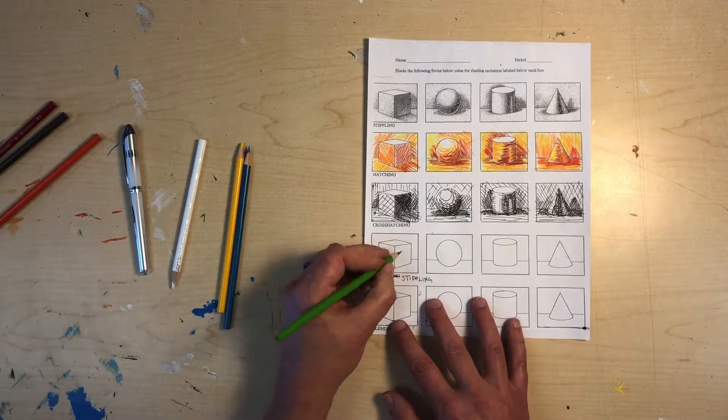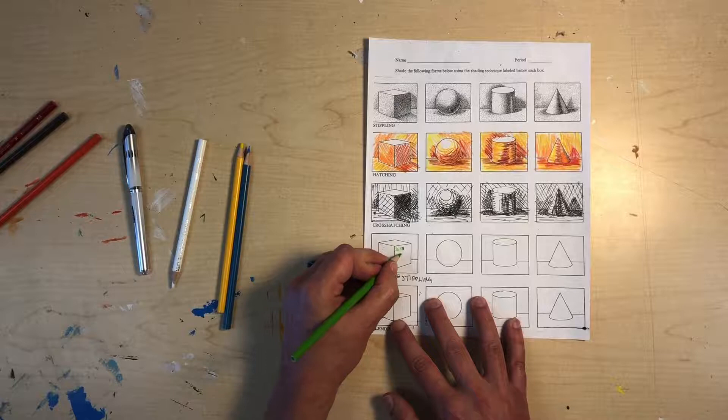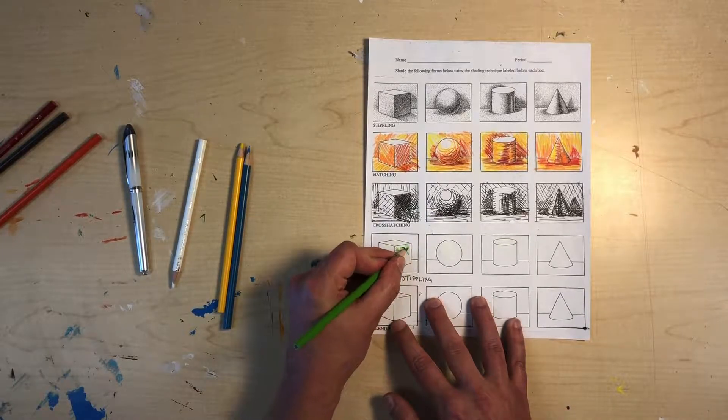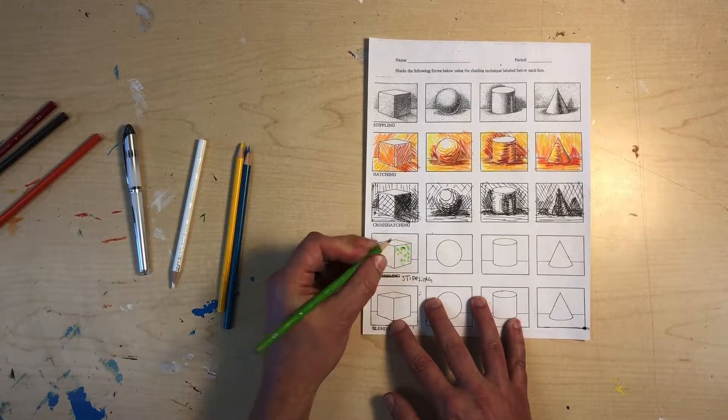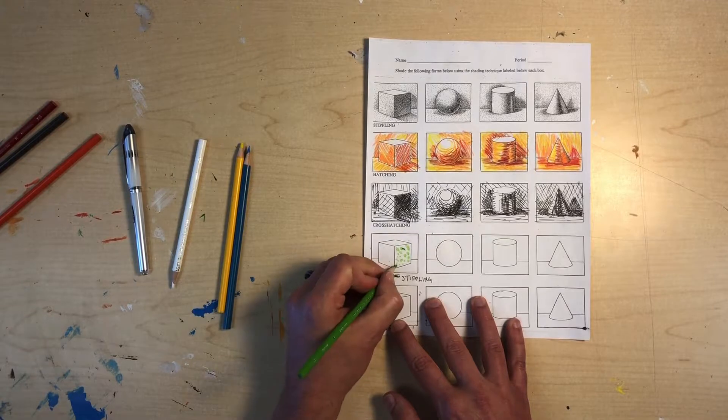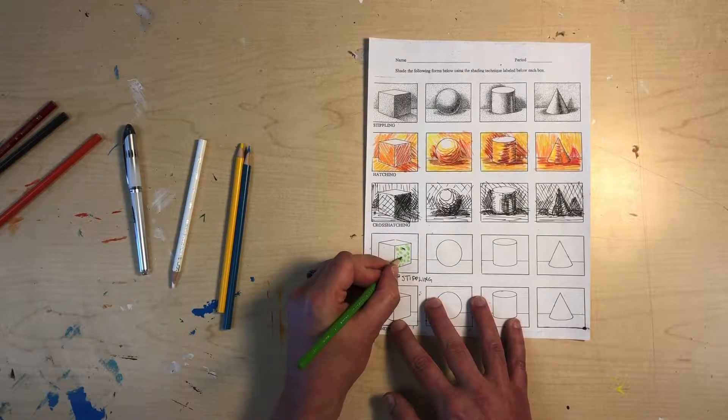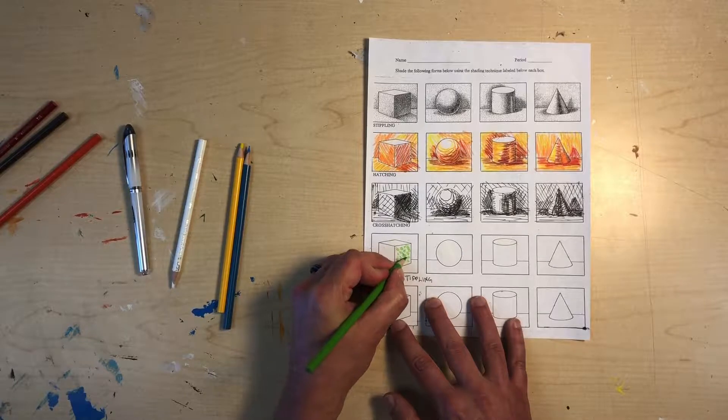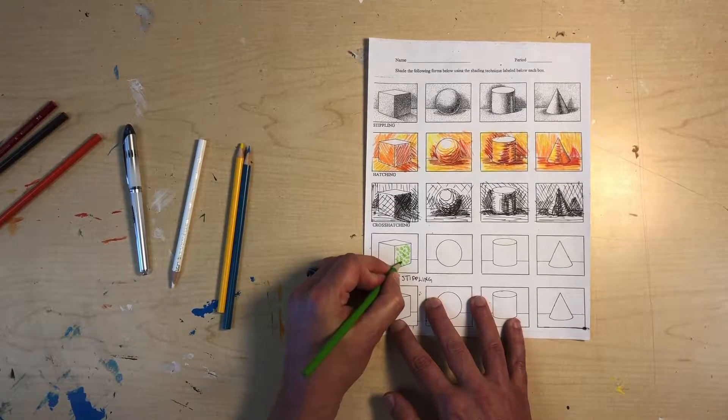And then I'm gonna start by again just adding little dots, adding dots, adding dots of green. Little dots, not tapping, it's more like drawing the dots, you're drawing them like little tiny O's.